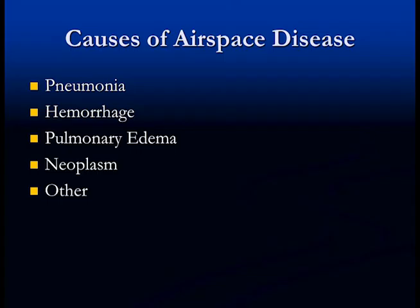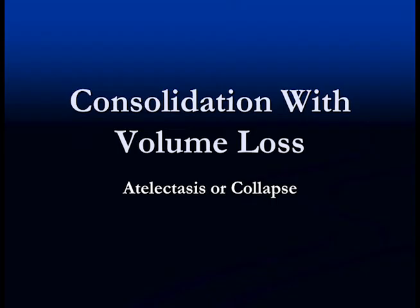What are the causes of airspace disease? There are several: first, pneumonia — lobar pneumonia in particular will cause airspace disease. Hemorrhage into the air spaces will cause consolidation. Pulmonary edema can be interstitial or airspace, and when it becomes severe it causes airspace disease. Finally, certain neoplasms cause airspace disease as well, along with a few other idiopathic conditions.